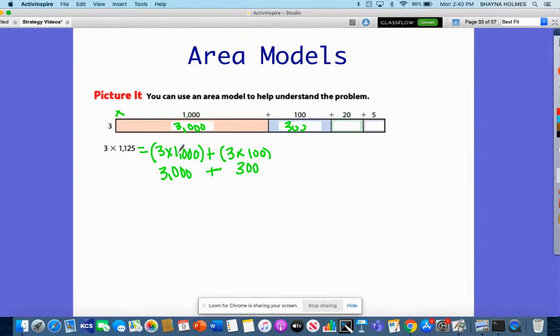I have 3 times 100, and that gives me 300. Don't forget my addition sign. I've got to bring it down. I've solved this and I'm bringing it down right underneath. Now I'm going to go to my tens. I'm going to do 3 times 20, and 3 times 20 is 60.